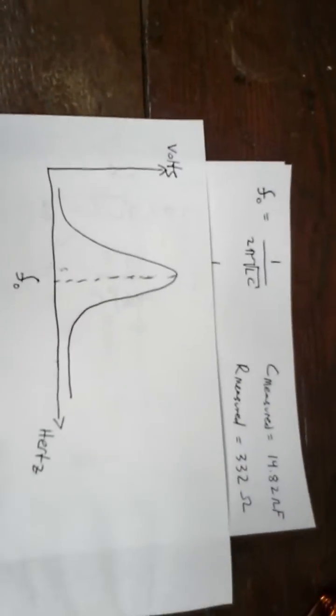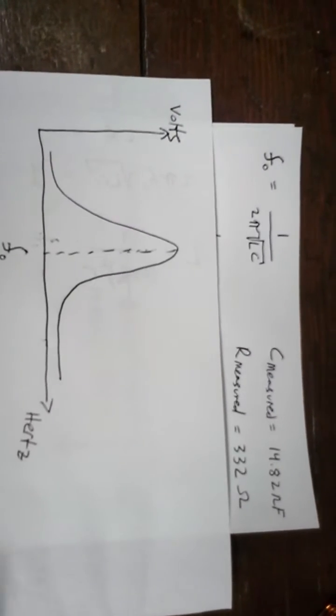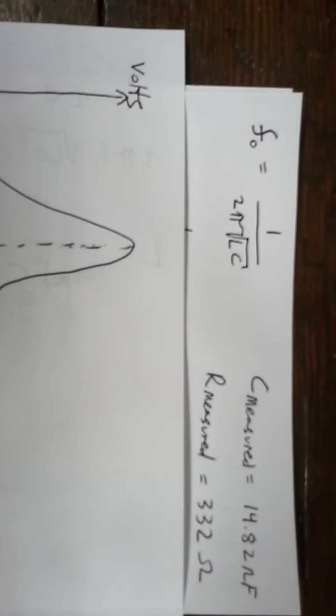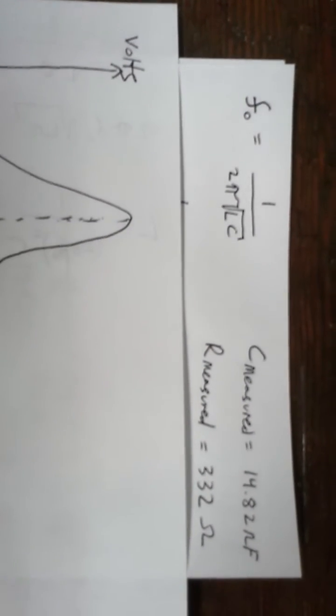So the resonant frequency of a tank circuit is 1 over 2 pi square root of LC, where L is the inductance and C is the capacitance.